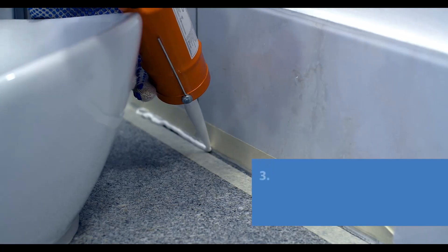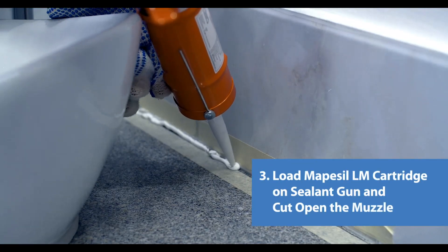Now load the Mapecil LM cartridge on the sealant gun and cut open the muzzle.